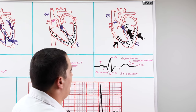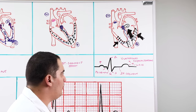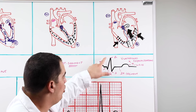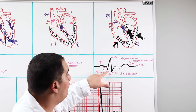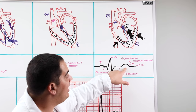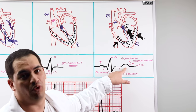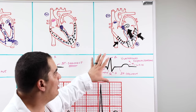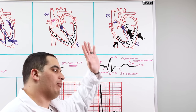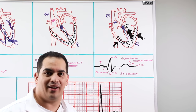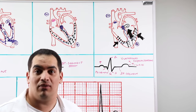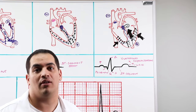So to quickly recap the entire EKG waveform: the P wave indicates atrial depolarization, the QRS complex indicates ventricular depolarization, and the T wave indicates ventricular repolarization. Now that we understand where these waveforms come from and why they're up, down, or isoelectric, let's do the same thing with all 12 leads of the EKG.